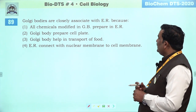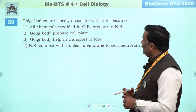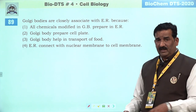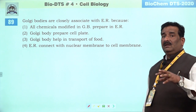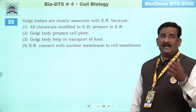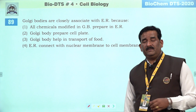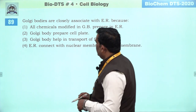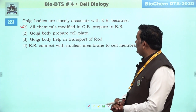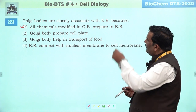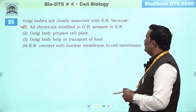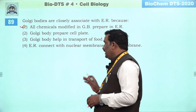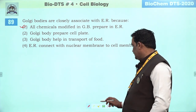Next question: Golgi body are closely associated with ER. Kyon closely associated hain — kaha jaata hai ki nuclear membrane se connect hote hain RER. Golgi body bhi constantly arranged hote hain near the nucleus. Kyunki all those substances which are modified, packed, and secreted towards any target points from Golgi body — these chemicals are prepared inside the ER. Iska matlab first hi right answer banta hai. Golgi body prepare cell plate — theek hai, lekin association show nahi kar raha. Golgi body help in transport of food — aisa nahi hai. First is the right answer.